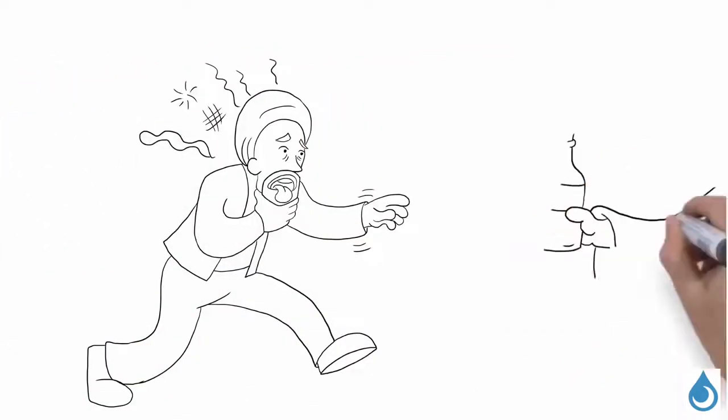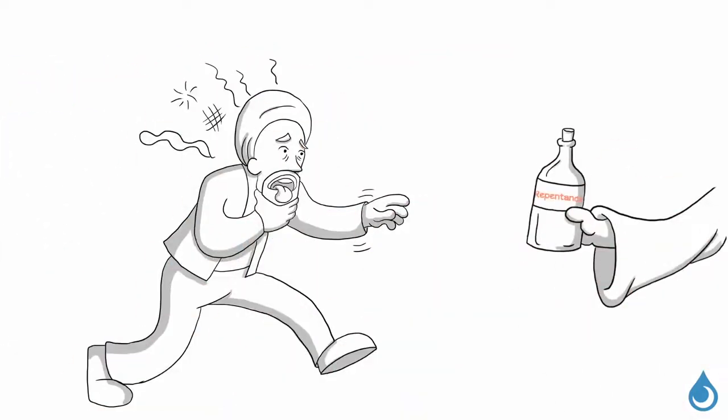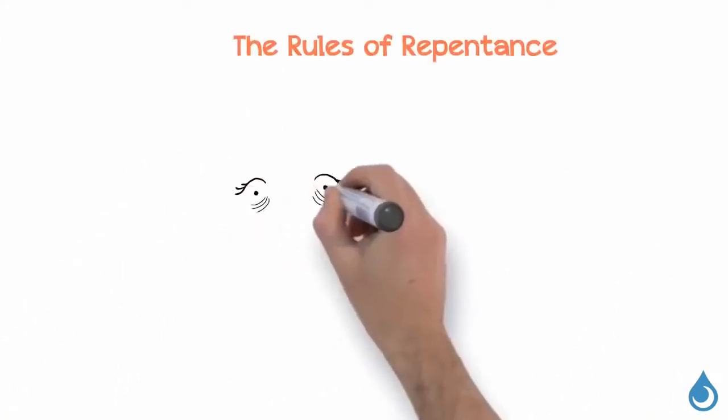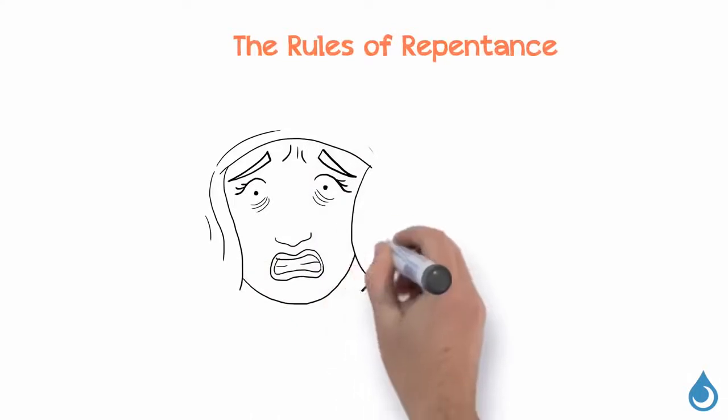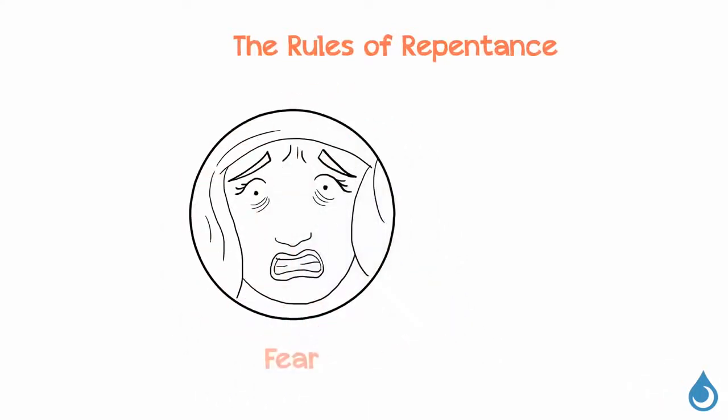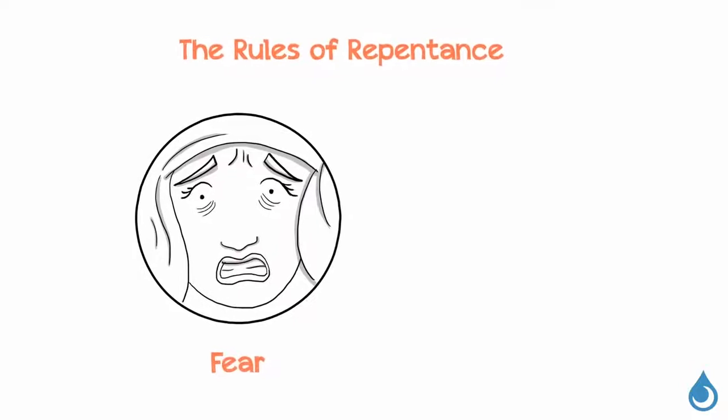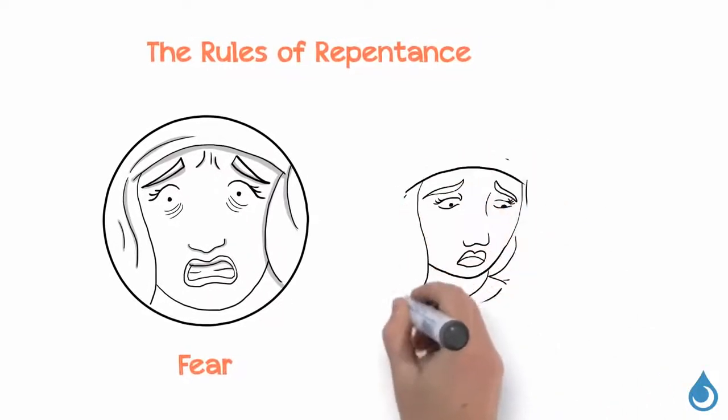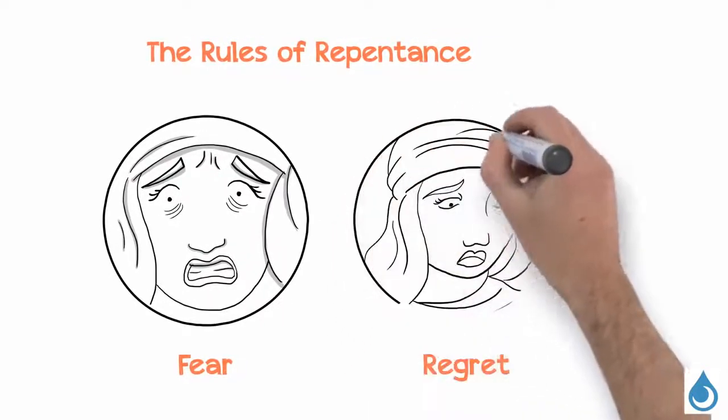Know that the antidote for the poison of sin is repentance. When one learns they consumed poison, the immediate emotional reaction is fear for whether they will live or die. The next emotion is regret, for having mistakenly consumed the poison.